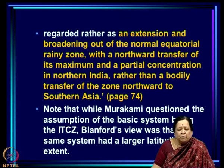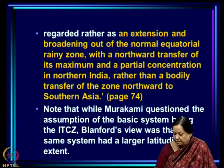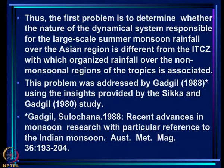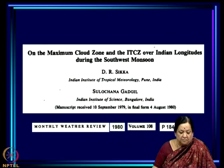While Murakami questioned whether the basic system for the monsoon was the equatorial trough or ITCZ, Blanford said the system is kind of spread from equator to north India. The problem is to determine whether the nature of the dynamical system responsible for the large-scale summer monsoon rainfall over the Asian region is different from the ITCZ. This problem was addressed by Gargiil (1988) using insights from the Sikha and Gargiil (1980) study. It is worthwhile to look into the details of that study, published as 'On the Maximum Cloud Zone and the ITCZ over Indian Longitudes during the Southwest Monsoon.'